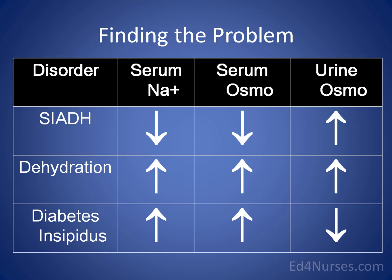In diabetes insipidus, you walk in and the Foley bag is full of dilute urine. You might expect a low sodium if the patient is volume overloaded, but in diabetes insipidus the serum sodium is actually high. The patient lacks antidiuretic hormone and is inappropriately diuresing, becoming dehydrated. They're dumping water in dilute urine while the serum is concentrating, so serum sodium and serum concentration go up.